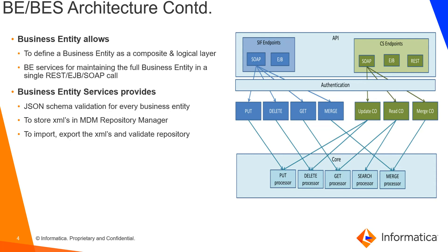It allows us to import and export XML content and validate the repository. On the right side of the diagram, the API can interact with the core level through either CIF endpoints or CS (composite service) endpoints. Today we're going to talk about composite service endpoints — how SOAP and REST calls are achieved. At the code level, it goes through a read CO, update CO, put processor, delete processor, or get processor implementation.